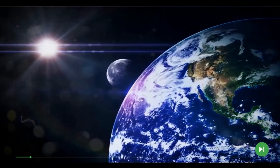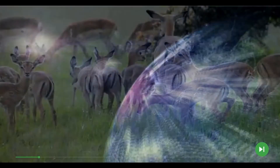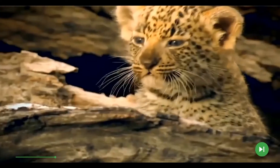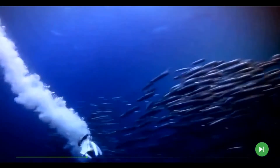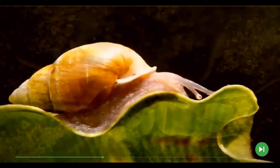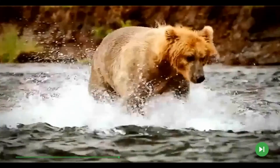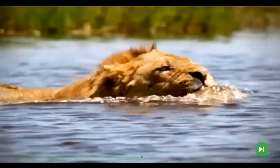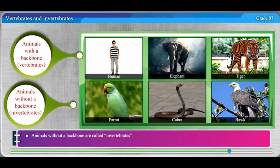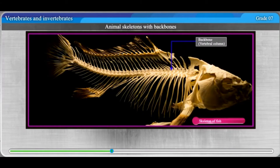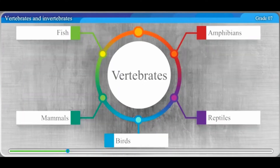There is a huge number of animals in our environment. The animals need to be categorized into groups based on a certain criterion in order to study about this animal world of a huge number of species. You may remember that in grade 7 you learned about animals based on the presence or absence of a vertebral column or backbone. We will further learn about animal classification in this lesson.